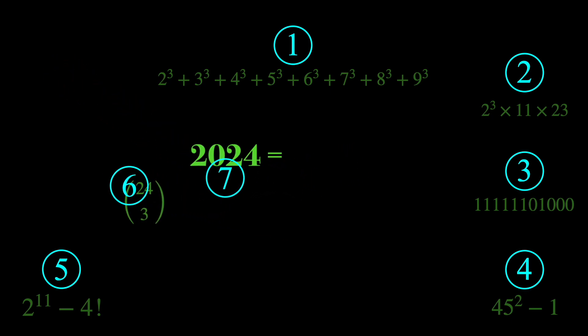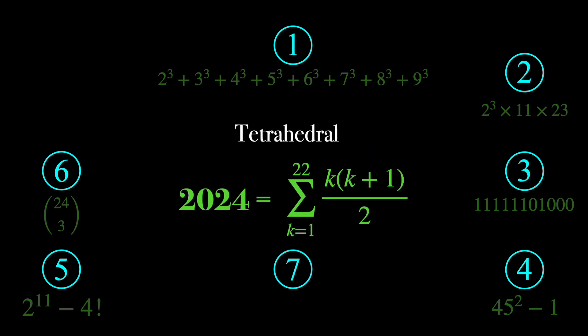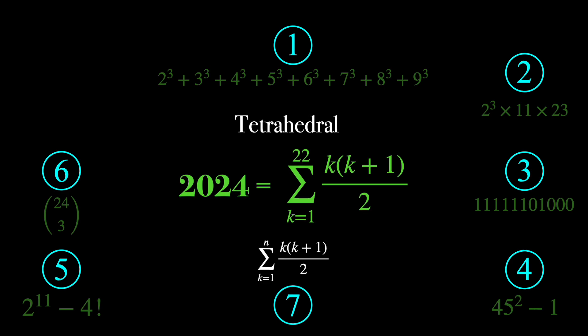And to wrap it up, 2024 is equal to the sum of k times k plus 1 divided by 2, where k goes from 1 to 22. This makes 2024 a tetrahedral number, which is any number that can be written as a sum of k times k plus 1 divided by 2, where k goes from 1 to some positive integer n.